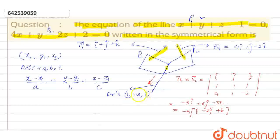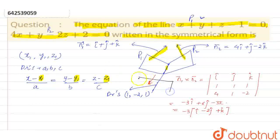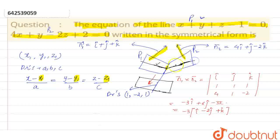Now we have the direction ratios. After getting the direction ratios, we require at least one point from which this line is passing. If we observe, this line is going to intersect the x-y plane. Plane P1 is intersecting the x-y plane at infinite points, and P2 is also intersecting at infinite points. But we will get one common point by substituting z is equal to 0, which will be common on both the plane equations.